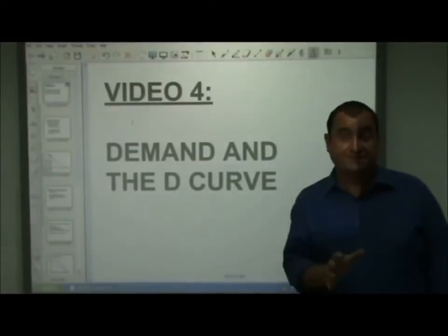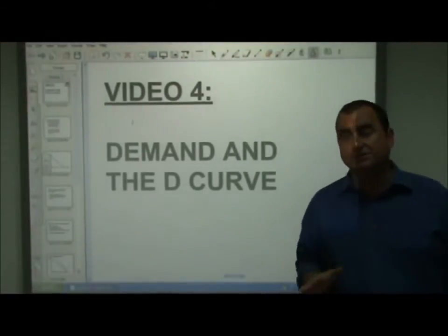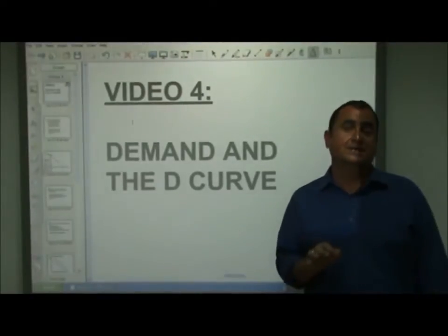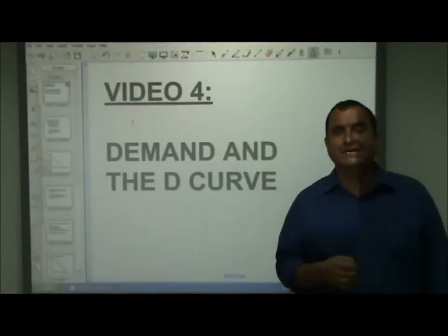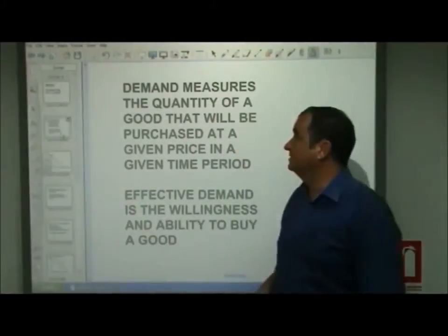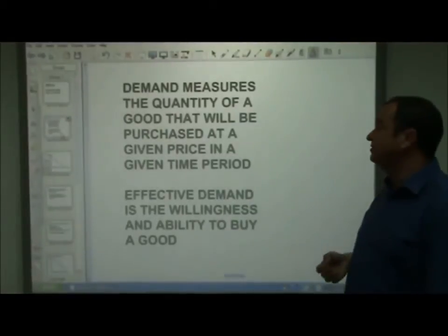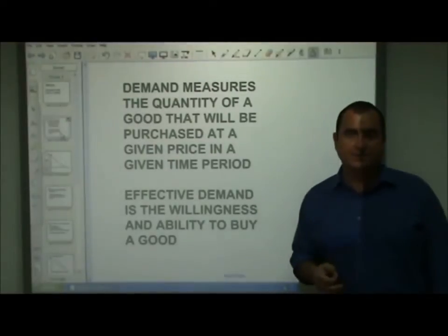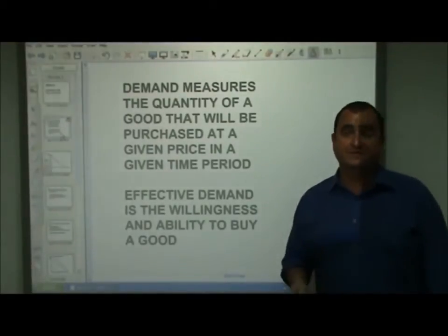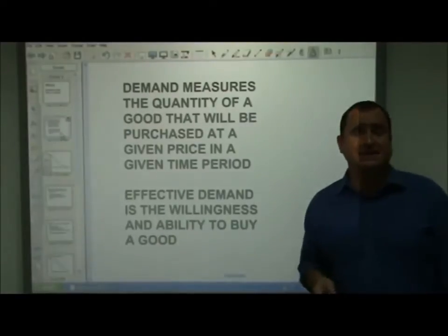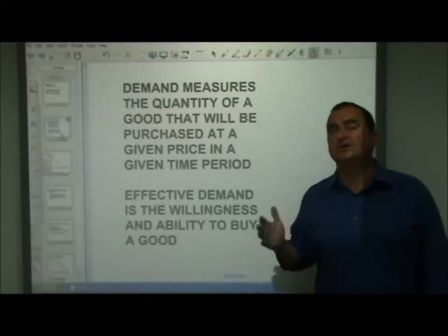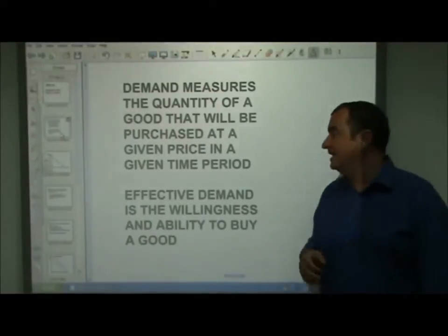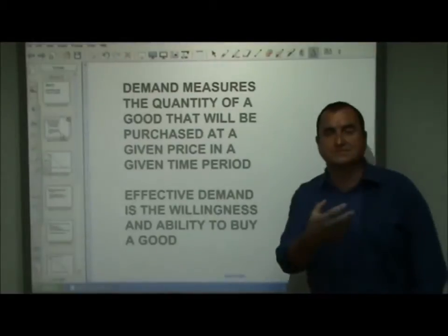Let's start by defining precisely what demand is. It's a very precise concept in economics — it's got nothing to do with the way the word is normally used. The definition is: demand measures the quantity of a good that will be purchased at a given price in a given time period. We can talk about the demand for cakes in a particular bakery shop, or the demand for cakes across a whole country per year at a particular price, and that will be a piece of statistical information.